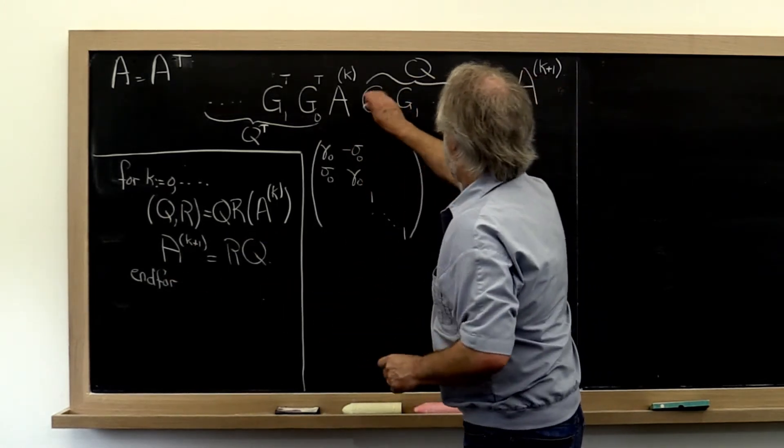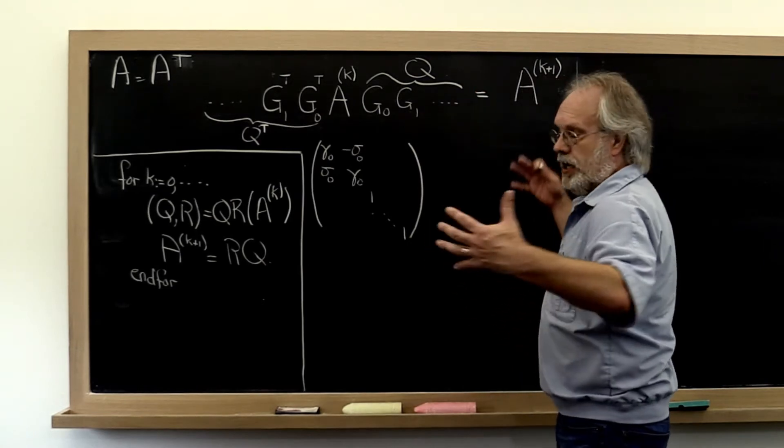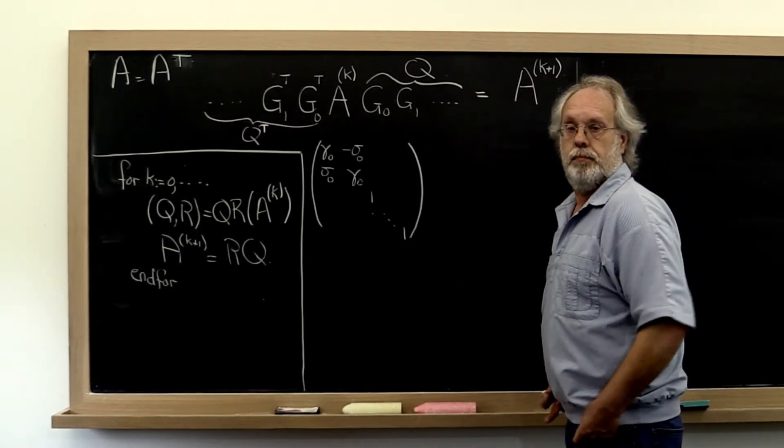Now let's have a look at this. This is our matrix Q if we actually multiplied it all together.